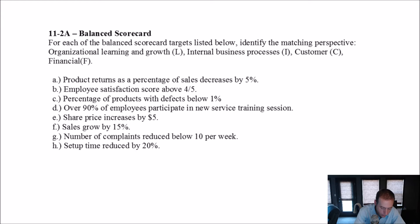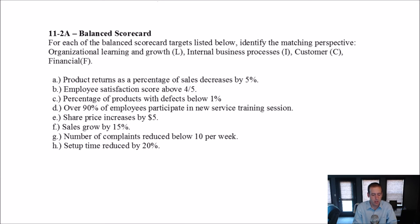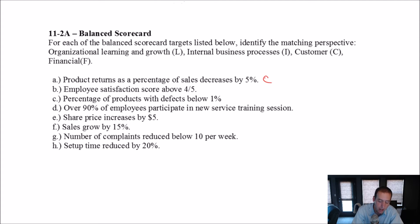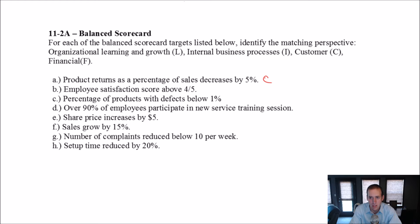The first one: product returns as a percentage of sales decreases by 5%. That's a good goal — we want to decrease the amount of product returns. What is that measuring? Is it measuring something in organizational learning and growth, internal business processes, customer, or financial? I think undoubtedly this item would either be internal business processes or customer, and I would definitely lean towards customer. It's a measure of how happy the customers are — if they're happy, they're not going to return as much.